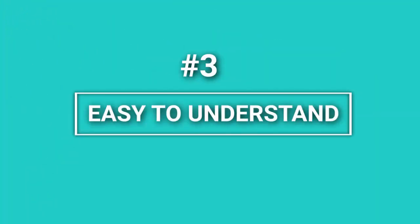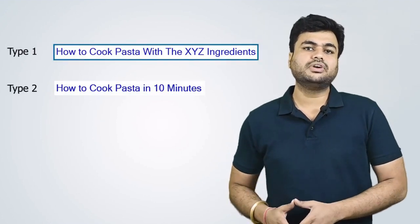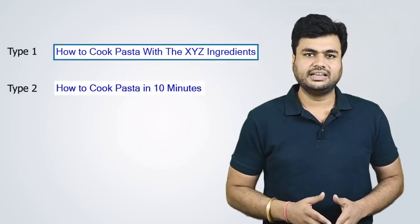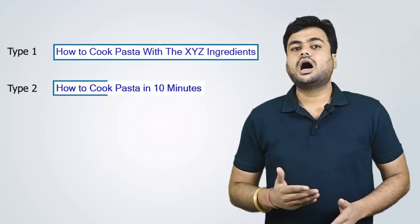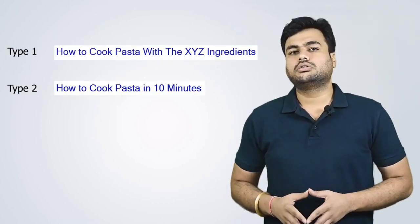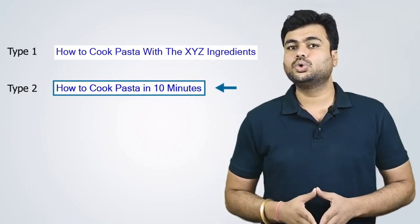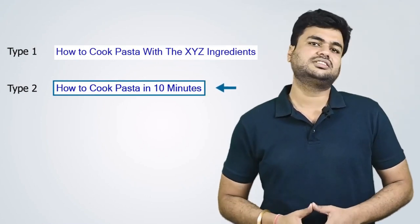Third, make your title tag easy to understand for your readers. Let's understand this point with an example. Suppose you want to learn how to cook pasta. You search on Google and find two types of results: first is 'how to cook pasta with XYZ ingredients,' and the next is 'how to cook pasta in 10 minutes.' Which result will you click on?